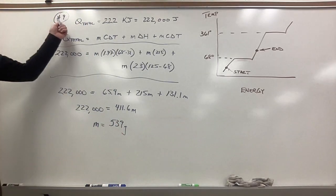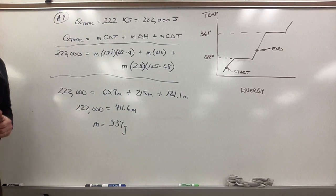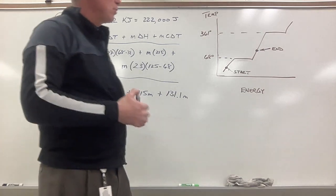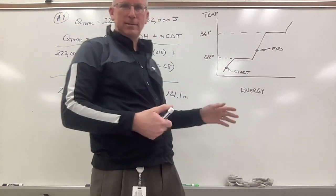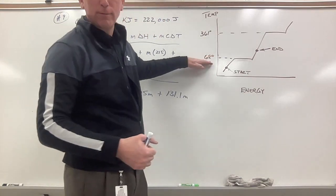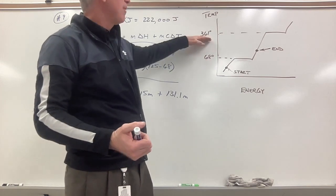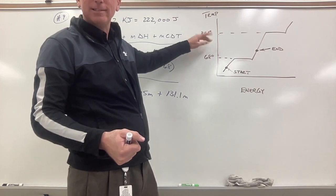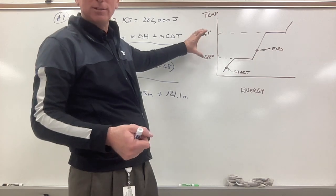All right, finally let's take a look at the answer to number nine. So in number nine it tells you that you're gonna start with some wax. Wax is gonna freeze or melt at 68 degrees and wax is going to boil or condense at 361, so we have to adjust our graph.